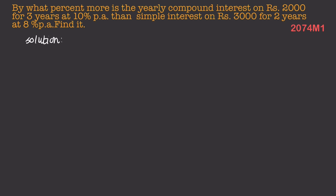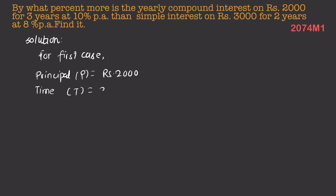Solution. First case: principal P is equal to RS 2000. Time T is 3 years, and rate R is 10% per annum. Now we calculate compound interest.